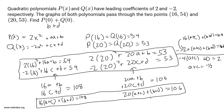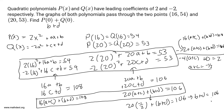Now that we know a + c = -1/2, we substitute back into the second equation: 20(-1/2) + (b + d) = 106. Since 20 times -1/2 is -10, we add 10 to both sides to get b + d = 116. Therefore, p(0) + q(0) = 116. Thanks for watching and I'll see you next time.